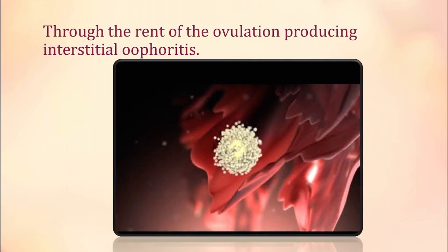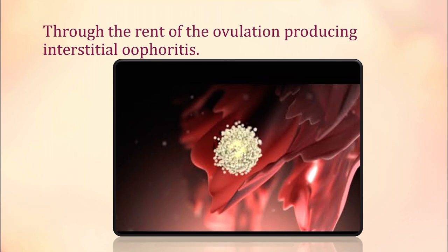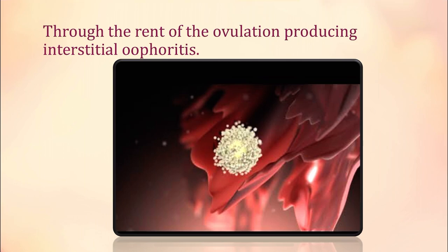The fourth route is through the rent of ovulation, producing interstitial oophoritis. When the ovum breaks through the follicle and the follicle breaks open, the egg is released into the cavity. When this ovum is released from the ovary, it releases a kind of irritating fluid which causes interstitial oophoritis.